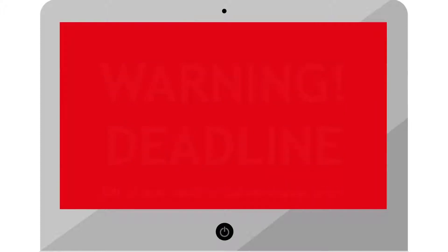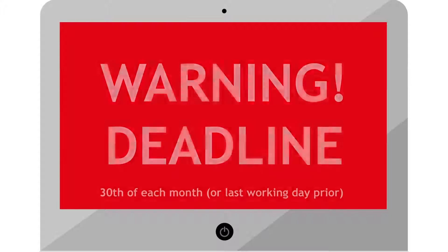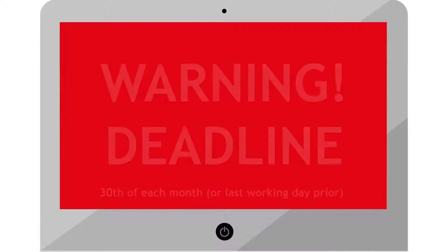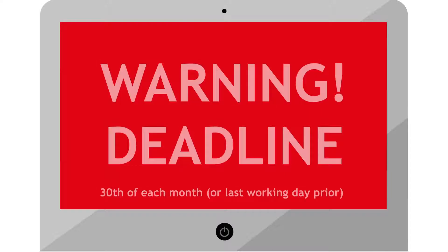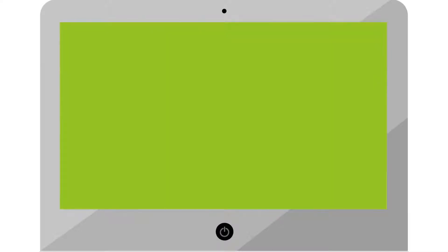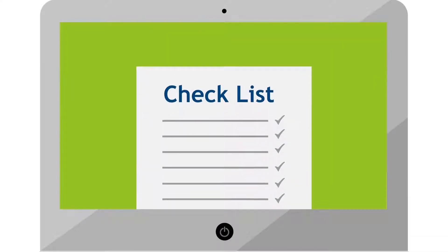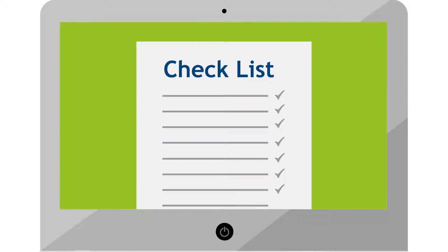There's also a deadline of the 30th of each month, or the last working day prior, to return any errors produced to teachers' pensions. Each quarter you'll receive a checklist which contains any members that teachers' pensions believe to be missing from your returns.